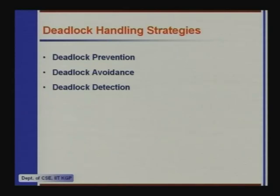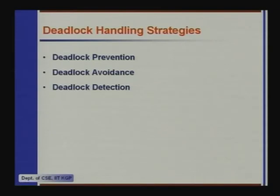We are going to look at three different types of deadlock handling strategies. In deadlock prevention strategies, we prevent deadlocks from happening by making certain rules such that if you follow those rules, you will never have deadlocks. One rule could be that all the resources will have to be acquired at the beginning of the transaction, and we will acquire all those resources in a particular order.